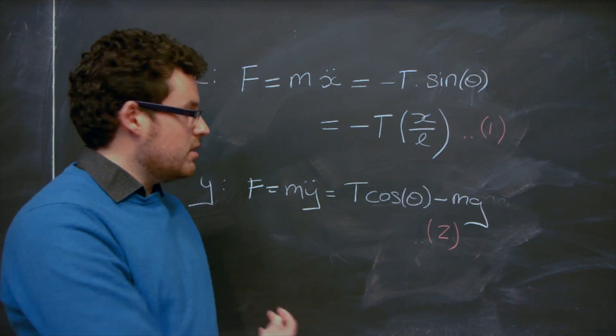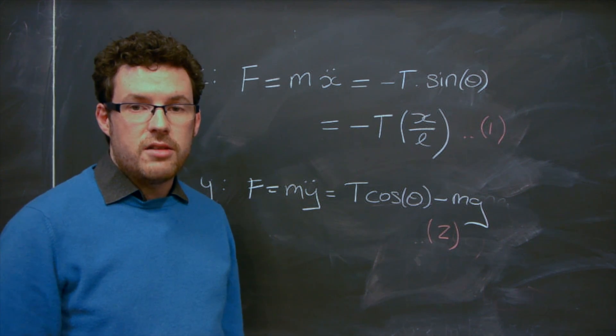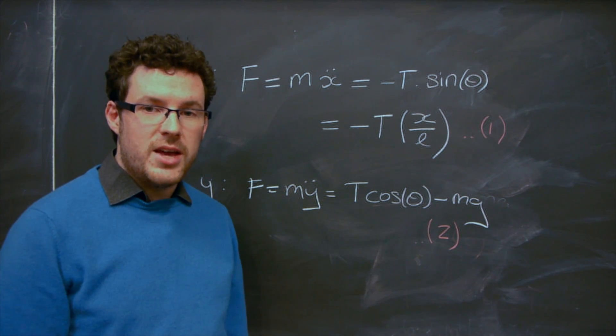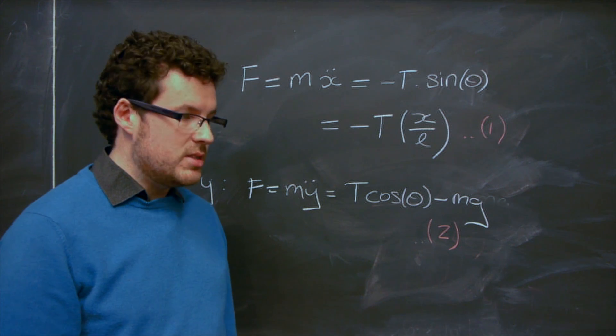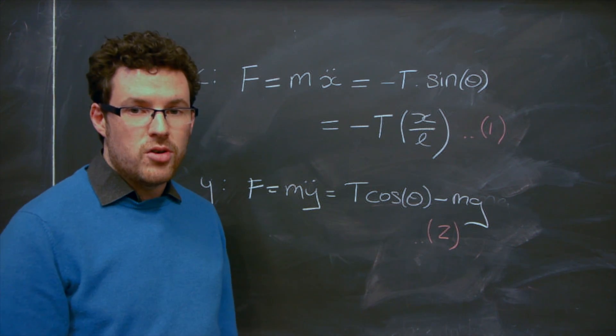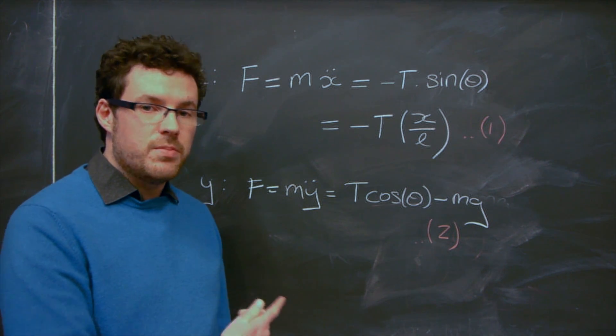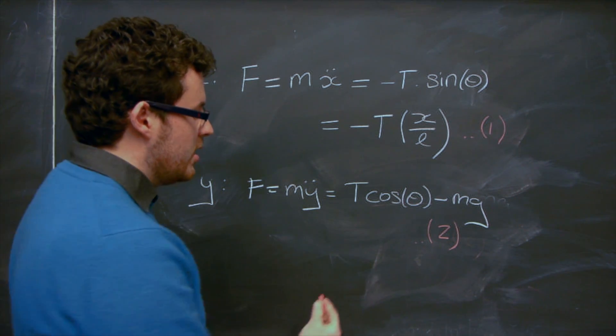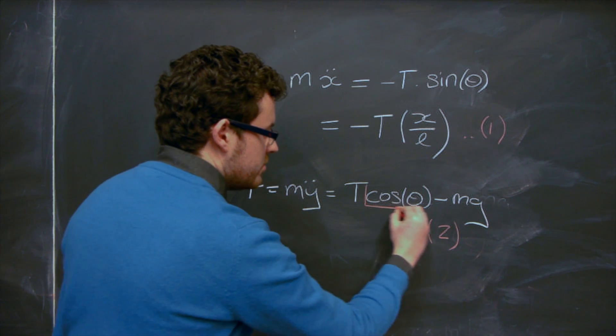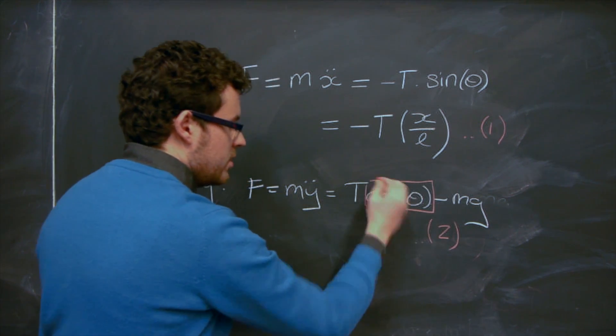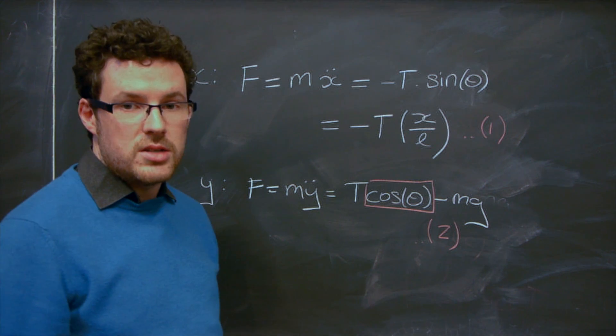So these are incredibly difficult equations to solve. So we need to make some approximations. So the first thing we'll do is we'll say let's keep theta very small. And if we keep theta small, then we can simplify these equations here. And the first thing we can do is we can say that the cosine of theta, when theta is very small, is approximately 1. So that's going to tidy up this equation.